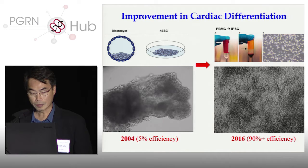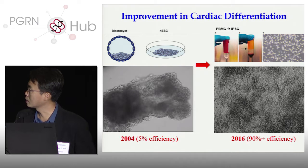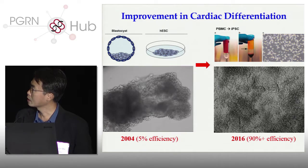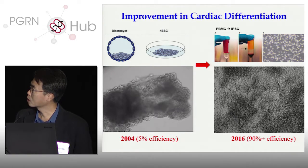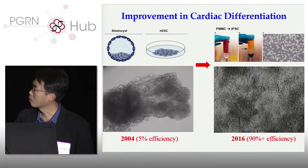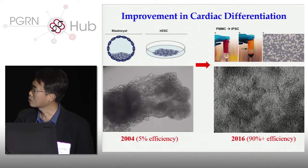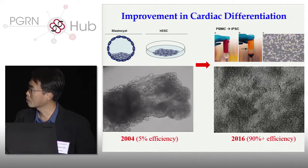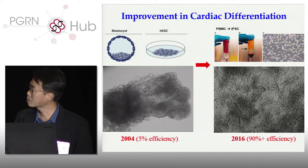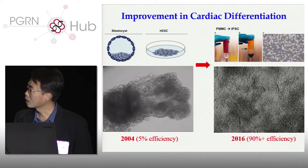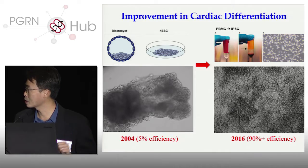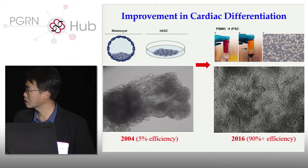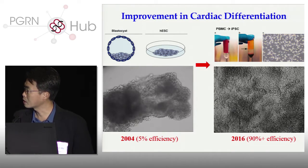After about twelve years of work, instead of using human ESC cells, we now routinely take a patient's blood. From 10 cc's of blood we can make your iPSCs, and from your iPSCs we can make tons and tons of your cardiomyocytes — essentially mass production. It's pretty routine for us to make a run of 200 million iPSC cardiomyocytes at about 90% efficiency.